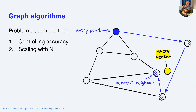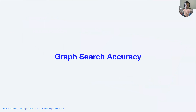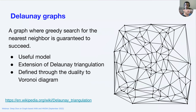Now I'll hand over to Yuri, who will go into a lot more detail on graph algorithms and HNSW, starting with how to control the accuracy of your graph algorithms and scaling with the number of items in your index. We'll decompose the graph algorithm into how accuracy is controlled and how scaling works. The primitive used to understand accuracy in graph algorithms is Delaunay graphs — a graph where nearest neighbor search for one neighbor using greedy search always ends up in the correct result.